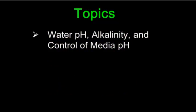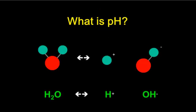First, water pH, alkalinity, and control of media pH. A good way to start this off is: what exactly is pH? With water, a small percentage of the water will break apart into hydrogen ions — that's H+ — and hydroxide ions, the OH−. When we talk about pH, what we're measuring is the hydrogen ion concentration, H+ concentration in the solution.